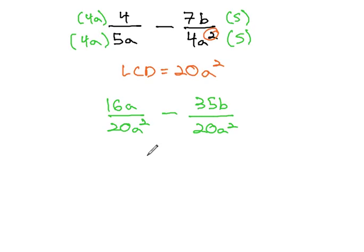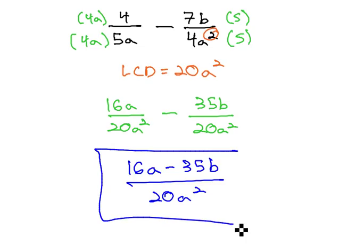We can combine them together. They're not like terms, so we have 16a minus 35b over our common denominator of 20a squared. The numerator cannot factor, so it cannot be reduced. This is our final answer.